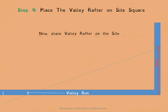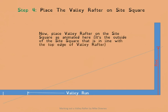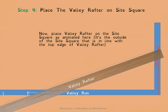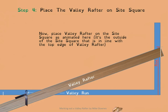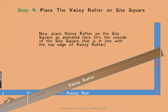We place the valley rafter on the side square. You swing the bevel blade in line with the rise leg of the square to set the plumb cut angle. Once that angle is set, the same plumb line occurs at the top and again down at the tail. You mark it, then slide the bevel down the back of the valley, mark it again, and come back down to get the fascia cut for the valley.